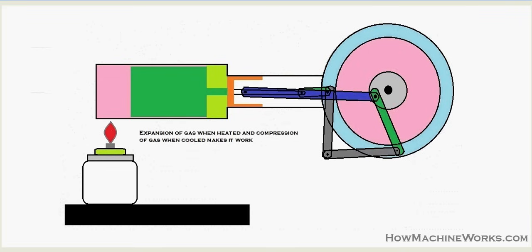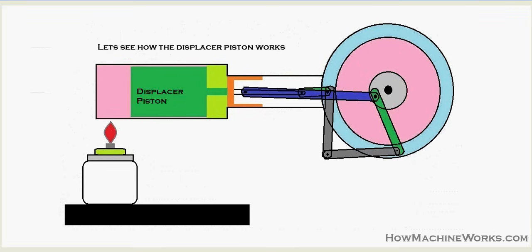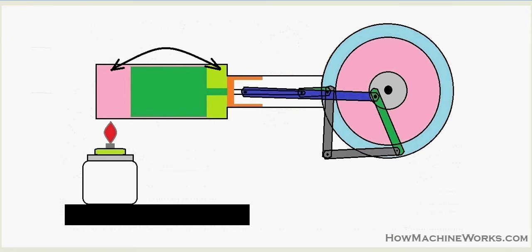The air is becoming colder at that section. Let's see how the displacer piston actually works. The green-colored piston, marked as the displacer piston, is a very critical part of this engine. The left side is the hotter area because we use the kerosene or alcohol burner there to heat the air. On the other side we have colder air, as it expands and comes back to that region and gets in contact with outside air.